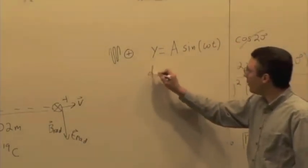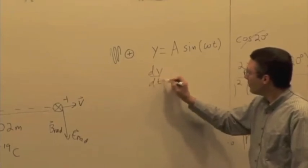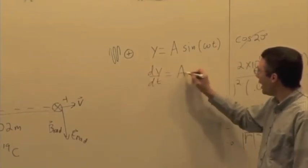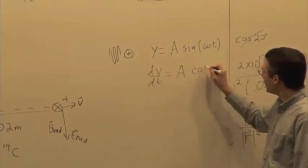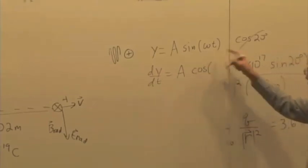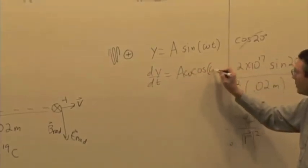And you can say, okay, well then the velocity of it is going to be the derivative of that. We get the derivative of sine is cosine, derivative of ωt is ω, so Aω cos(ωt).